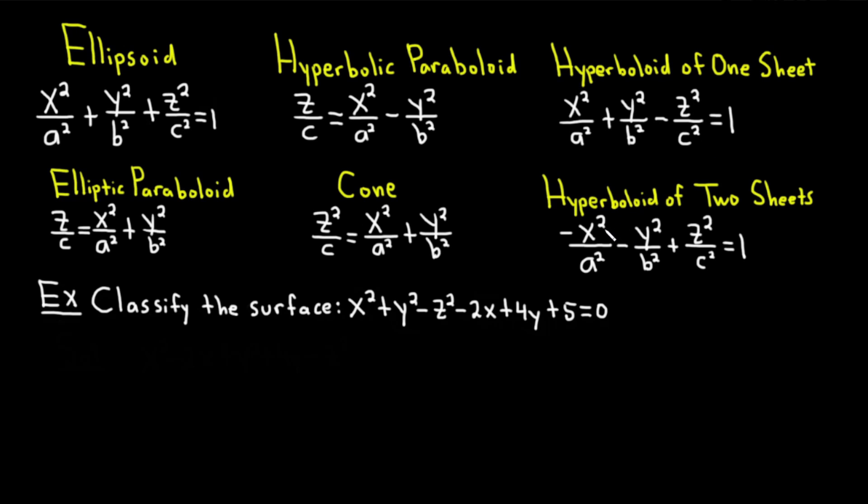And for a hyperboloid of two sheets, it's negative x squared over a squared minus y squared over b squared plus z squared over c squared equals one. And again, you have two minus signs in the one for two sheets and one minus sign in the one for one sheet.